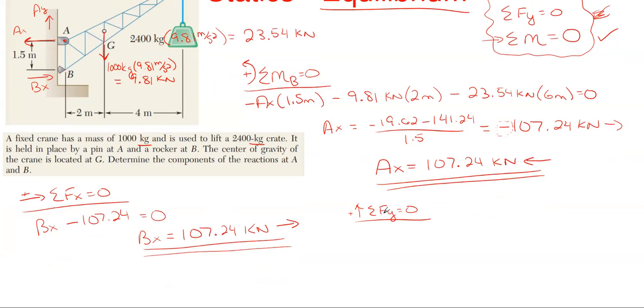So we have A sub y assumed upward minus the 9.81 kilonewtons of force and then minus our weight at the very end of 23.54 kilonewtons of force equal to zero. So Ay is just going to be the total of those two, and tallying up 9.81 plus 23.54 that gives me 33.35 kilonewtons of force. Came out to be a positive answer so I know my assumed arrow direction of up is the correct one.